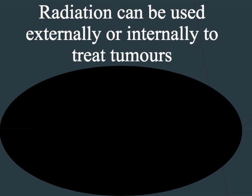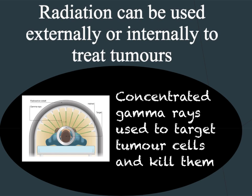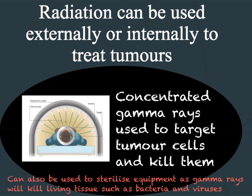Using PET we can treat tumours internally; however, we can also use concentrated gamma radiation to kill tumour cells externally. The gamma rays need to be concentrated so that they do not damage the healthy cells surrounding the tumour. Gamma rays can also be used in hospitals to sterilise equipment such as syringes, where the gamma rays pass through the packaging and kill any living tissue such as viruses and bacteria. As long as the equipment remains in a sealed plastic pack it will remain free of viruses and bacteria.